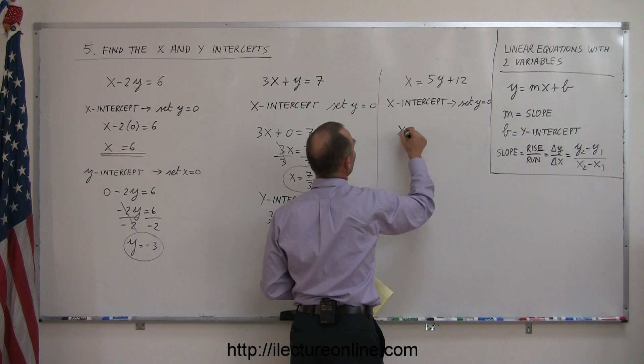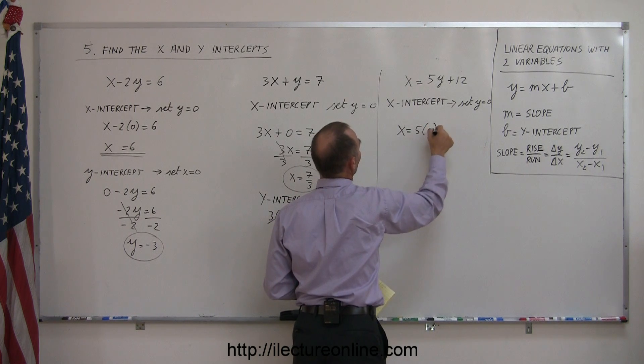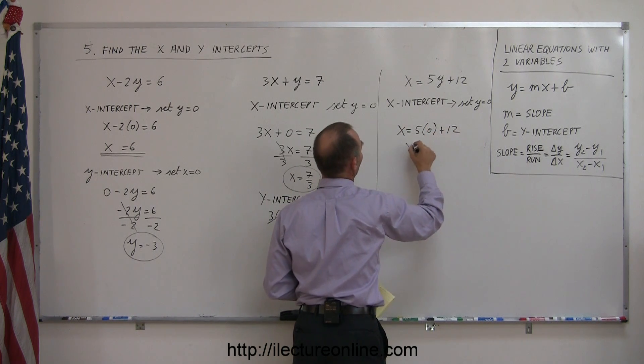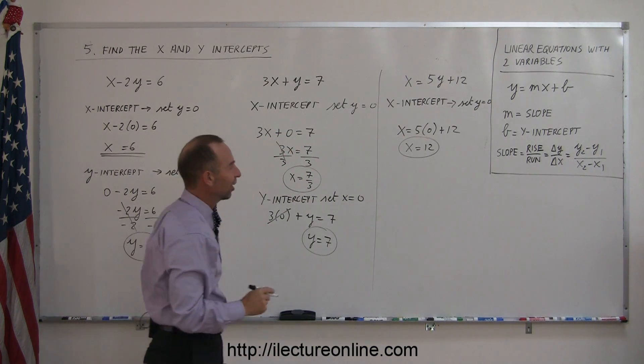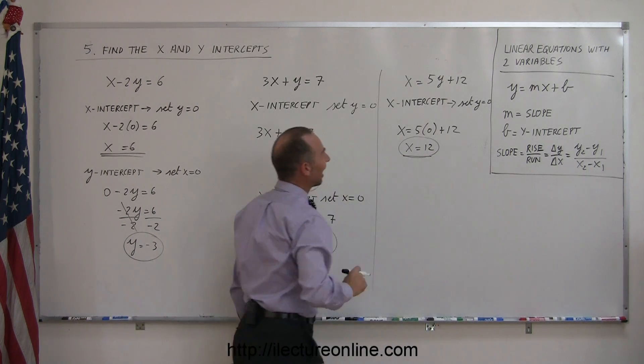We get x equals 5 times zero plus 12. Or, x equals 12. There's the x-intercept.